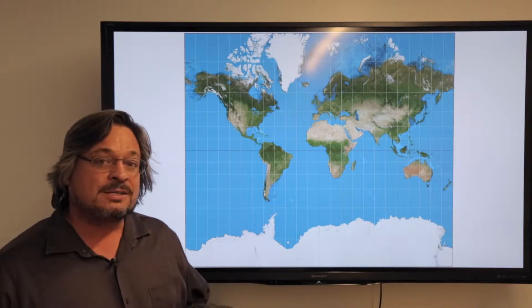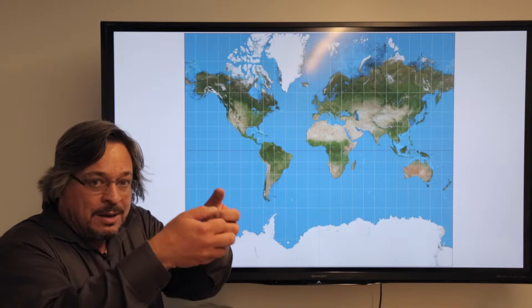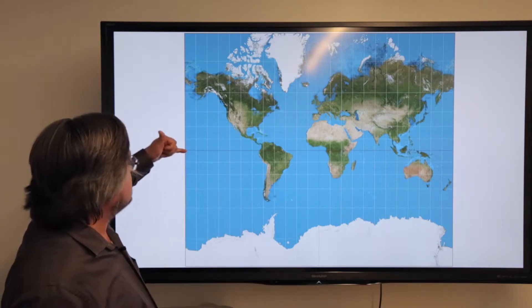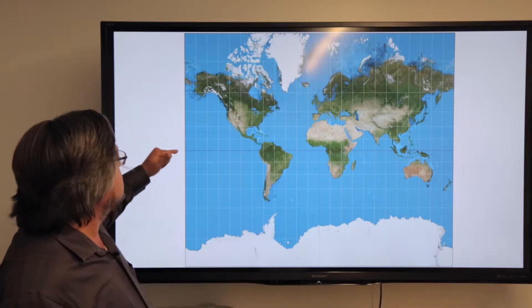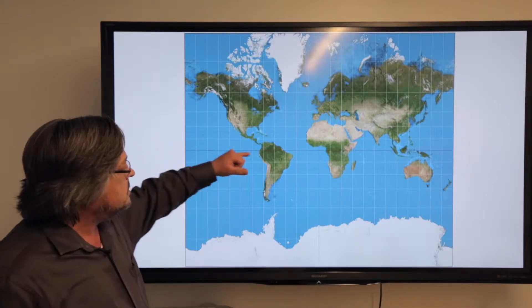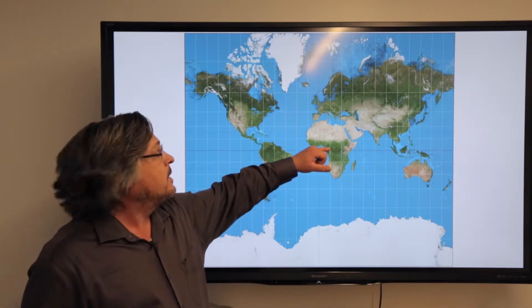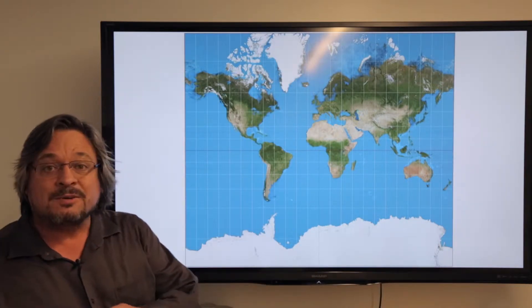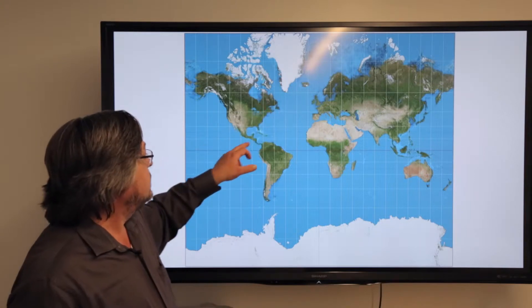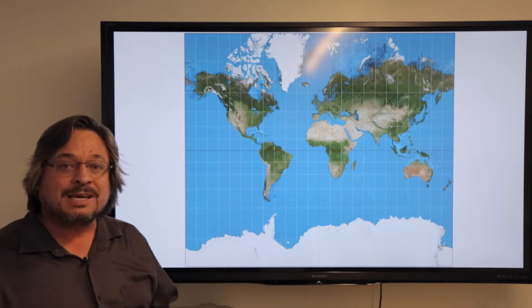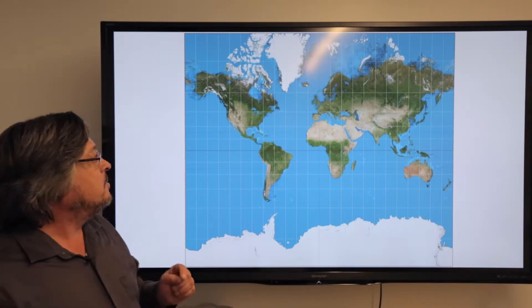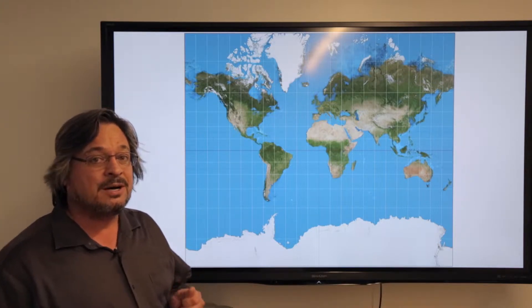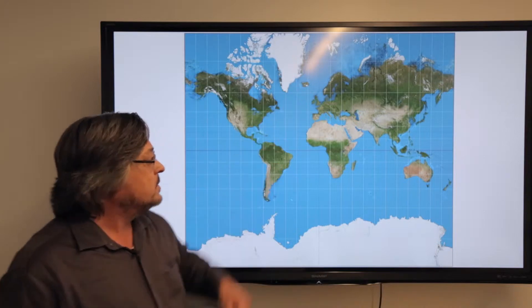Mercator is a cylindrical projection, meaning that it's wrapped around the cylinder and it has a standard line that is on the equator. Distortion is the least at the equator and expands greatly as you move north and south. People often point out that Greenland and Mexico are the same size of area, but since Mercator is a conformal map, it's preserving shape and not area, and that's why we get our huge distortions.